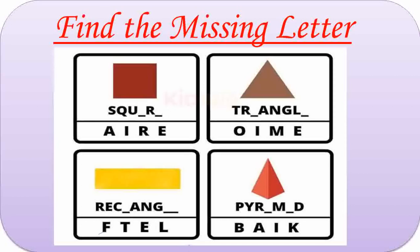Here are some shapes. The first one is Square. So the missing letters are A and E. S-Q-U-A-R-E. Square. Second one is Triangle. Missing letters are I and E. T-R-I-A-N-G-L-E. Triangle. The third one has three missing letters: T, E and L. The word forms Rectangle. R-E-C-T-A-N-G-L-E. Fourth one is Pyramid. Missing letters are A and I. Pyramid.